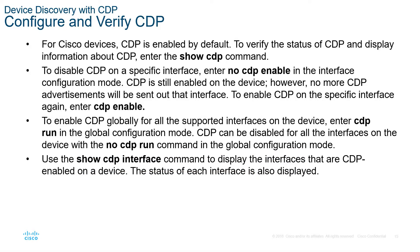To configure and verify CDP on Cisco devices: CDP is enabled by default. If you disabled it and want to re-enable it, the command is 'cdp enable'. To disable CDP on a specific interface, type 'no cdp enable'. To view the status of CDP and display information about it, use the 'show cdp' command.